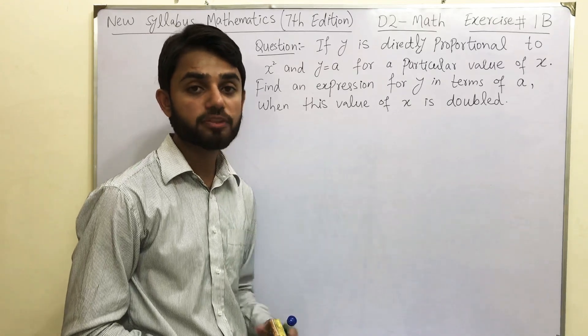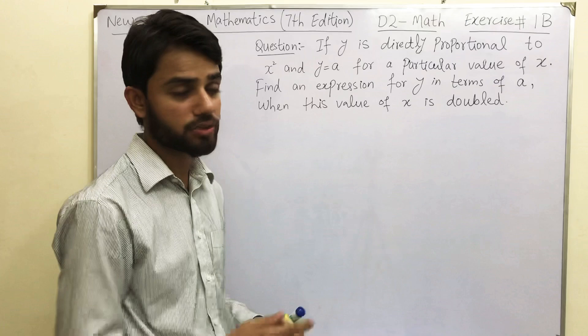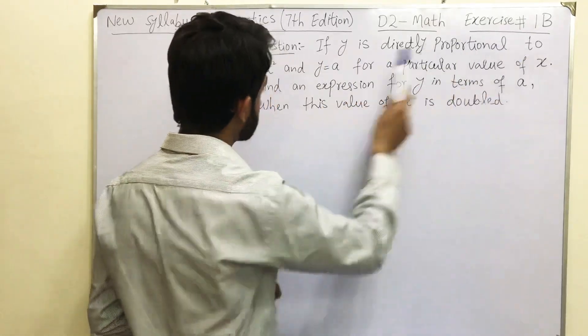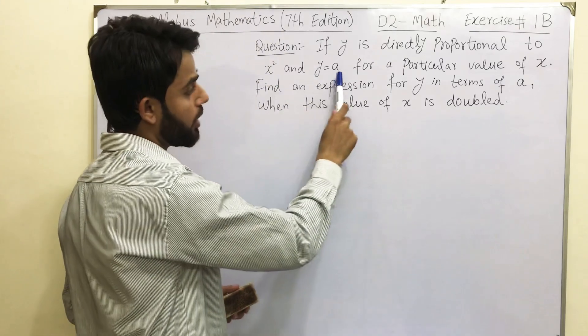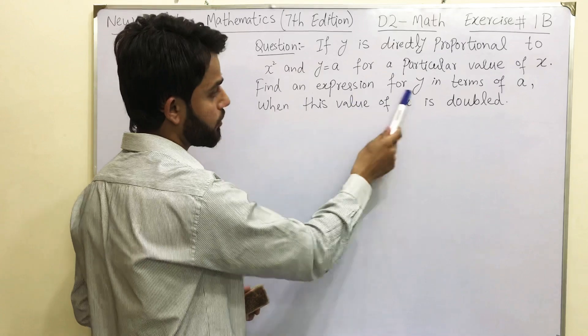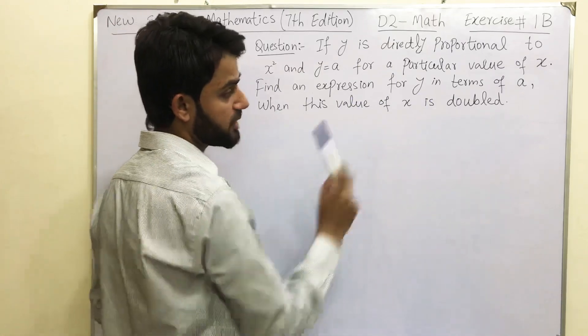I am going to read this question quickly and then we will come to the solution. It says if y is directly proportional to x squared and y equals to a for a particular value of x, find an expression for y in terms of a when this value of x is doubled.